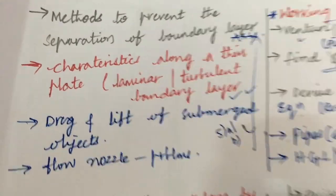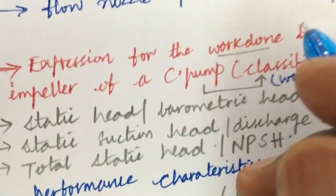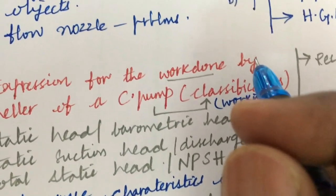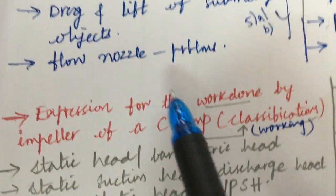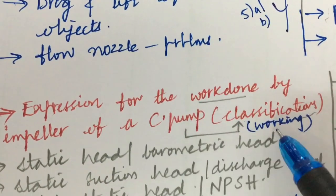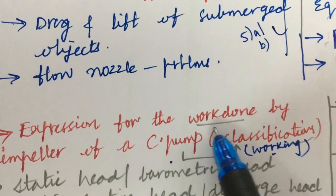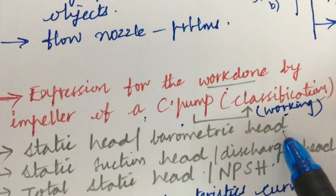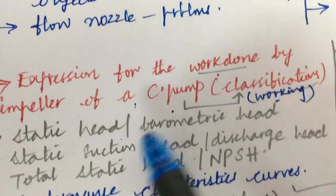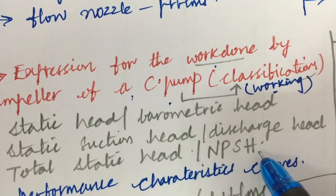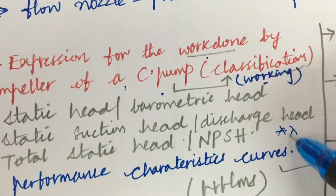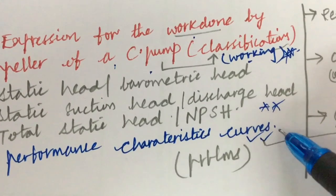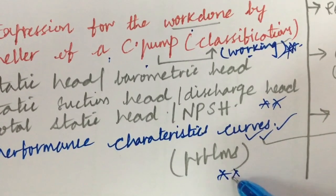You can cover 2 questions from every unit. I have taken unit 5 directly because unit 4 is all about turbines, which is too lengthy and you have less time to work out. So you can work out topics related to centrifugal pump classification and working principle with a neat sketch, the work done expression on the impeller, and define terms like static head, barometric head, static suction head, discharge head, total static head, and NPSH — net positive suction head. These are very important questions related to centrifugal pumps. Performance characteristic curves are also expected.